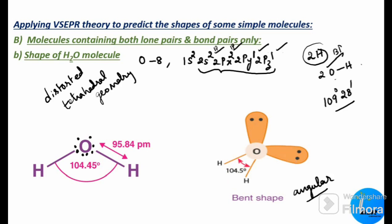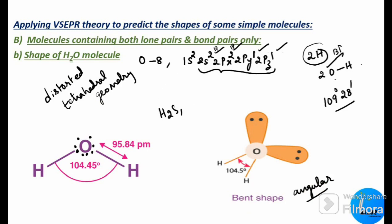Since there are two lone pairs, each repels the O-H bond pairs, causing the two bond pairs to come closer together — resulting in a bent or angular shape, also called distorted tetrahedral geometry. The bond angle shrinks to 104°5'. Other examples of this type are H2S, OF2, and SCl2, all having distorted tetrahedral or bent/angular geometry.